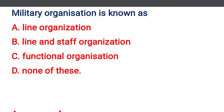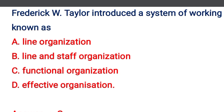Military organization is — option A: line organization, option B: line and staff organization, option C: functional organization, option D: none of the above. Basically, military organization is one-way communication, so that is called line organization.